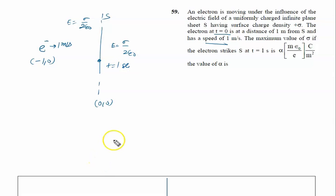We will apply the formula s equal to ut plus half at square. s is the displacement, electron is at negative position, so it is minus 1.